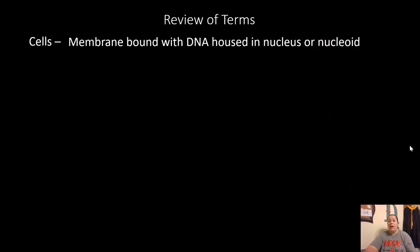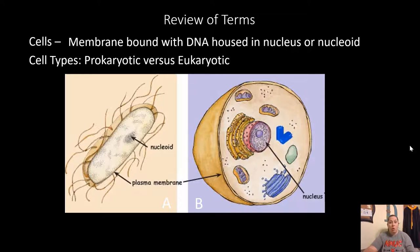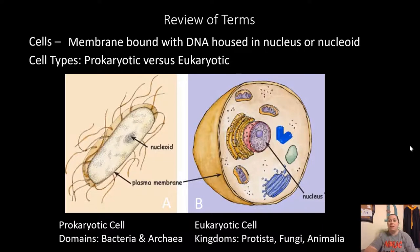Cells are membrane-bound and contain DNA. This DNA can either be housed in a nucleus — a bound structure — or in an area called the nucleoid. Looking at a diagram comparing cell A and cell B: cell A has no organelles and no nucleus, so A is the prokaryotic cell, found in the domains bacteria and archaea. Cell B is eukaryotic — you can see many more structures present. Those structures are the organelles, and these represent the kingdoms protista, fungi, and animalia.